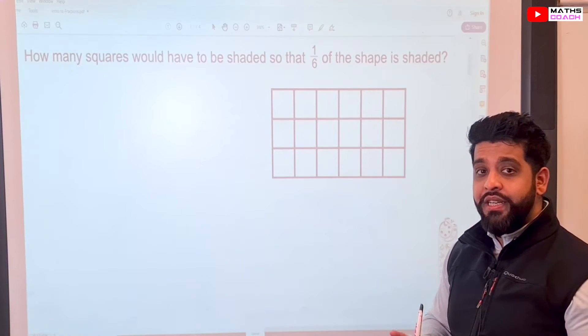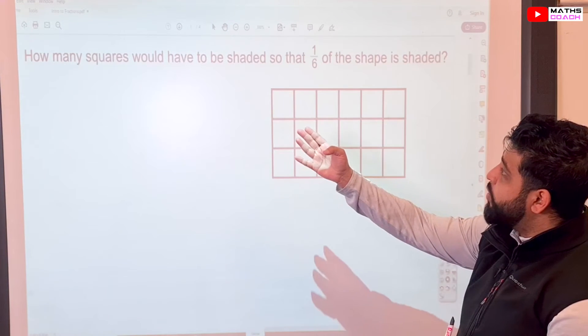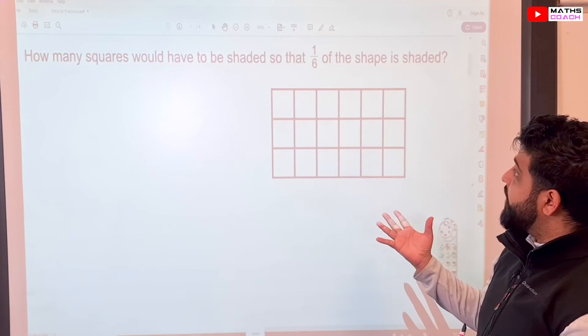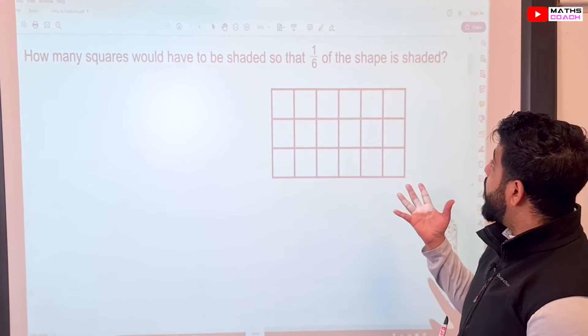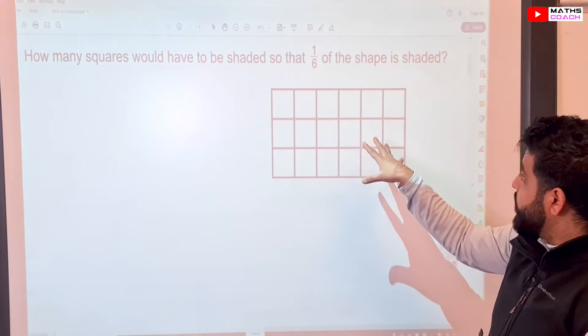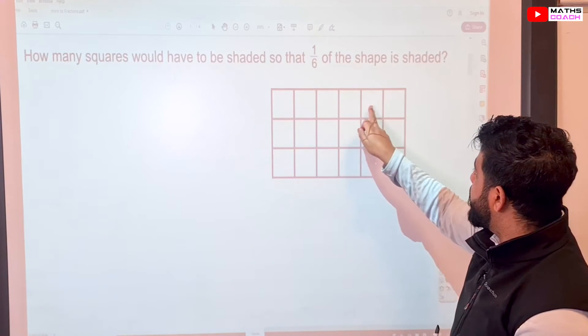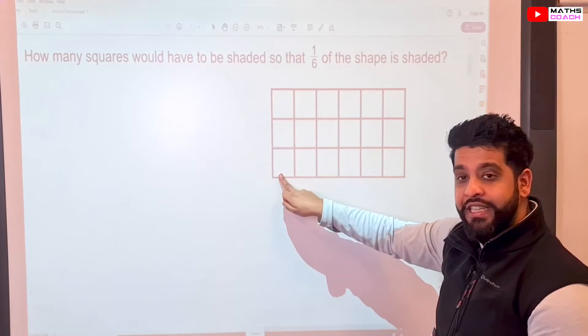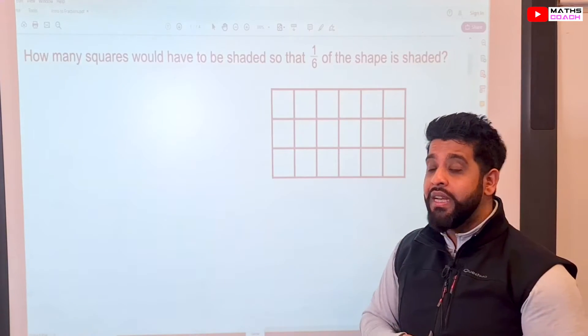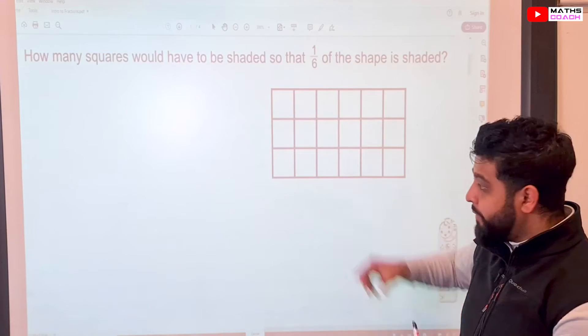Let's have a go at shading in the shapes ourselves. So behind me here, it says how many squares would have to be shaded so that one-sixth of the shape is shaded? We have this rectangle, and we have one, two, three, four, five, six across and three down. So six times three, that's 18. So we have 18 squares in total.